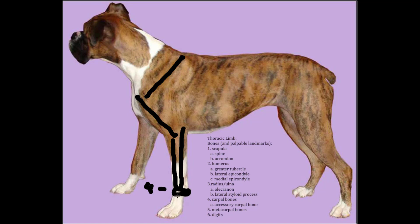Beyond the carpal bones we'll draw the metacarpal bones — meta means beyond, metacarpal meaning beyond the carpus. And then finally we'll finish off with the proximal, middle, and distal phalanges.